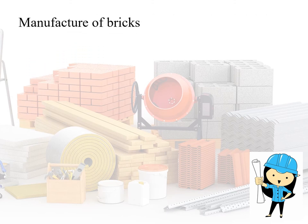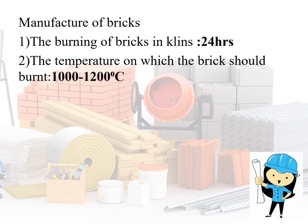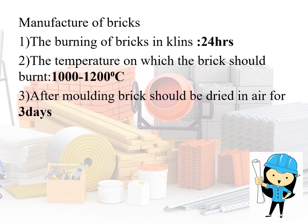Here are some important facts to remember about bricks. The burning of bricks in the kiln is done for 24 hours. The temperature at which bricks should be burned is 1000 to 1200 degrees Celsius. After molding, bricks should be dried in the air for 3 days — not in the sun, but in shade or pure air.